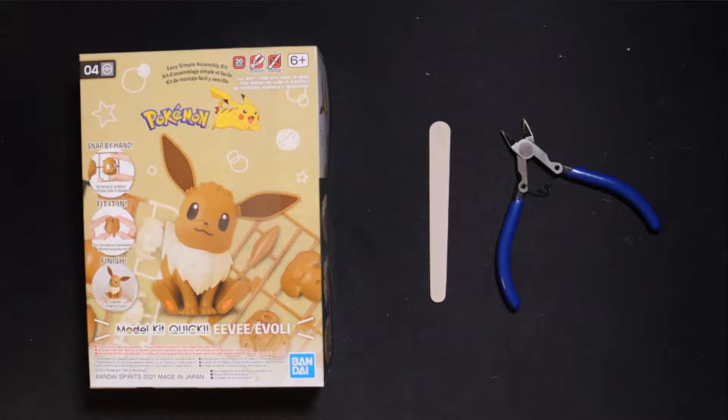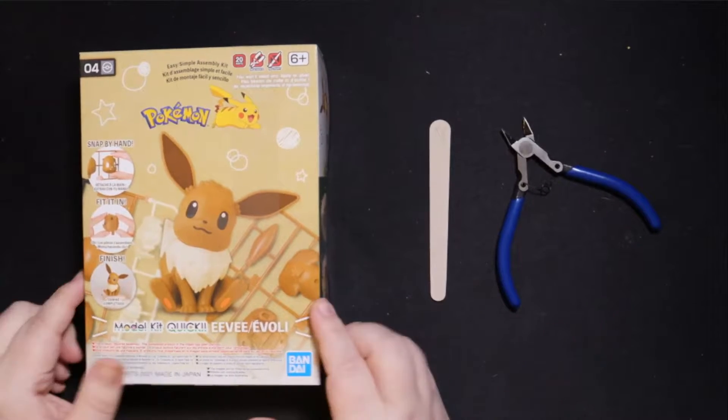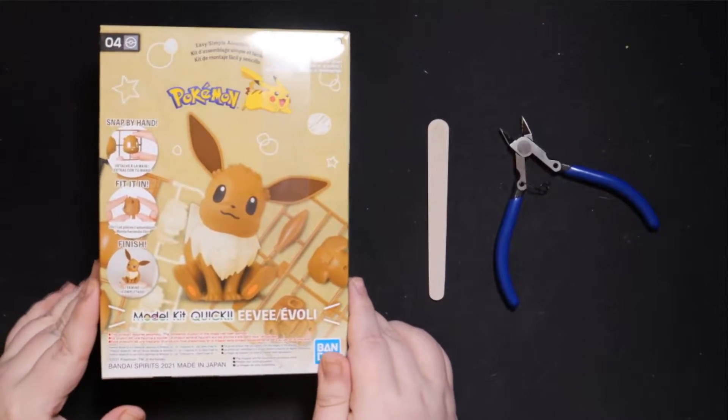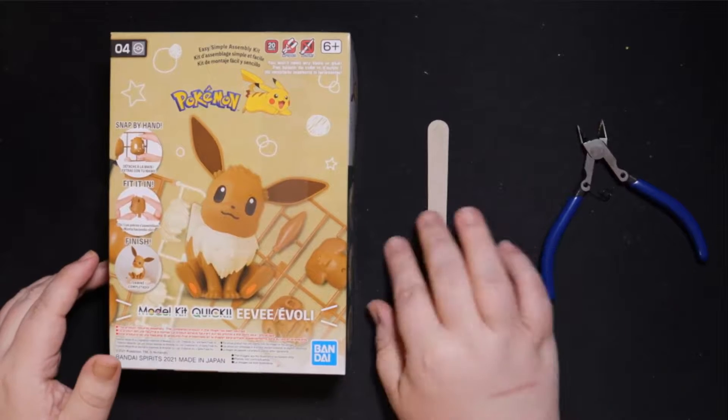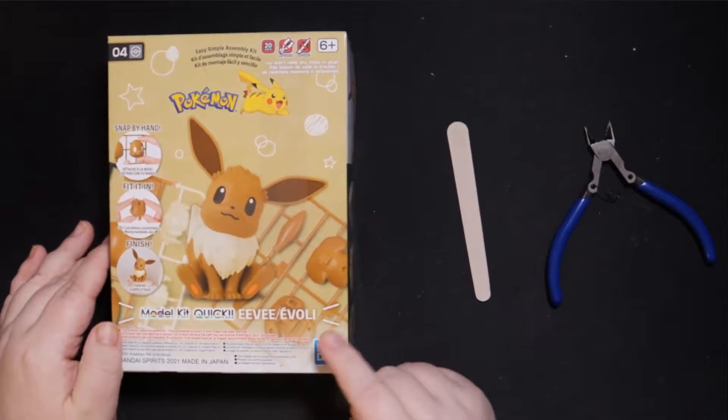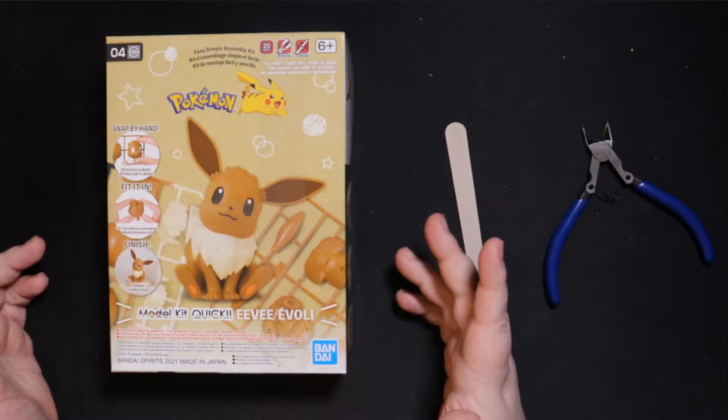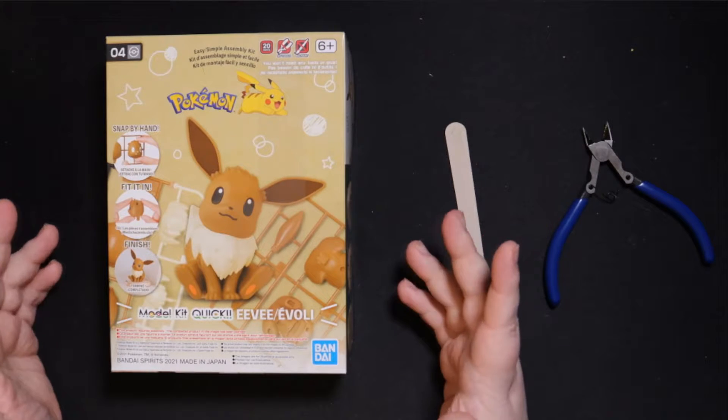Hey, everybody. Welcome back. It's Syndicate Gamer. And again, we're back doing a model. I know you guys are probably like, oh, not another model. We just saw you do Pac-Man. Well, I kind of like these. And again, I'm doing a Pokemon. It's Eevee.